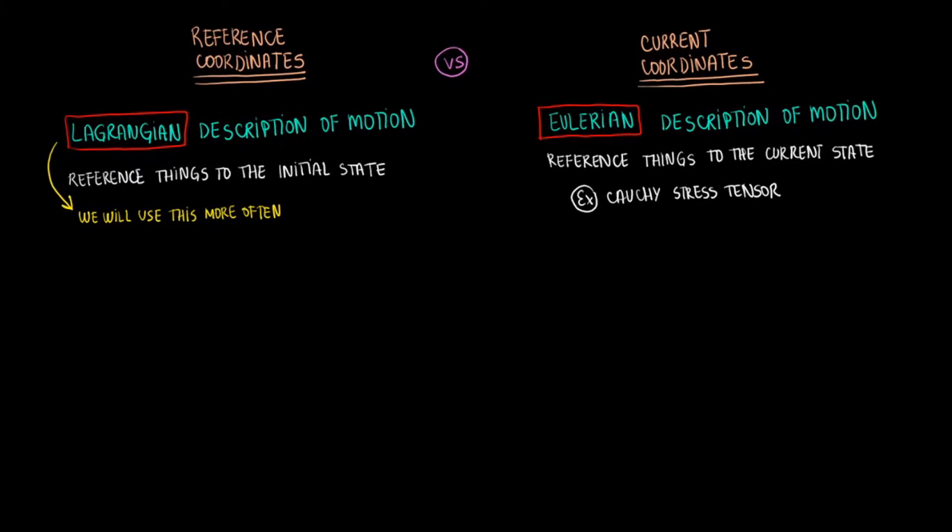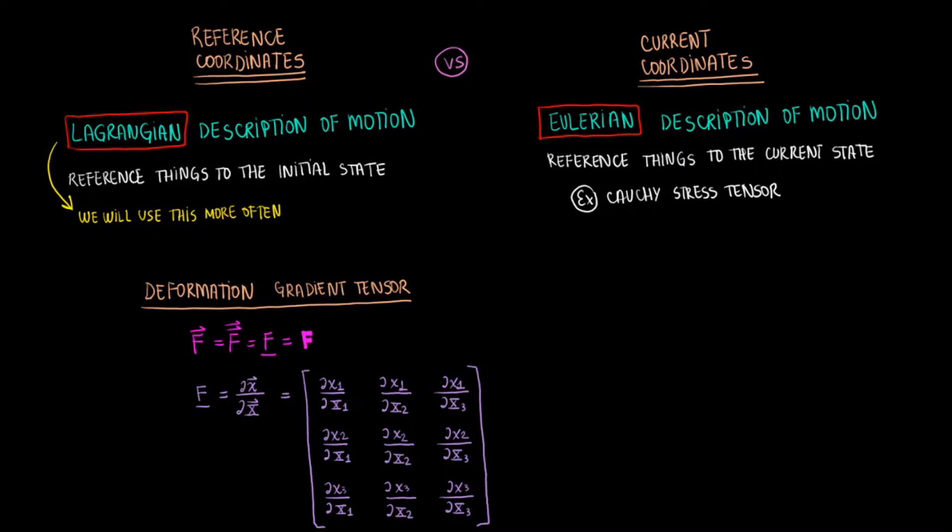Now back to the deformation gradient tensor. The deformation gradient tensor is a short, non-symmetric, non-singular, second-degree tensor. We like to use the letter F to represent it. Depending on the textbook, you may see one or two arrows above the F to represent the tensor. Some textbooks may actually write a line underneath it or make the F bold with the same intent of showing that F is a tensor. Although, as you will later learn, F is actually a pseudo-tensor.